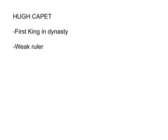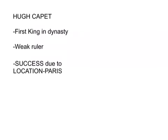The first king to begin the Capetian dynasty was Hugh Capet. He took over after the last king in the Carolingian dynasty died. He came to power in 987 AD and was a very weak ruler. However, he was successful due to the location of his territory, with the centre being Paris. As Paris was located on many trade routes and had an important fair, it made it easier for the king to expand the territory of his dynasty.